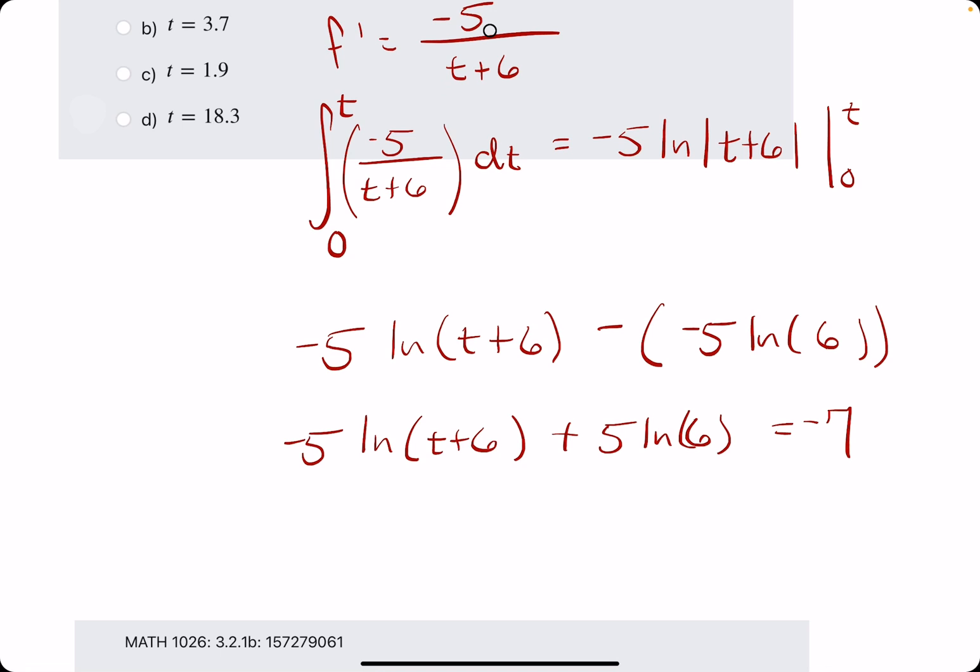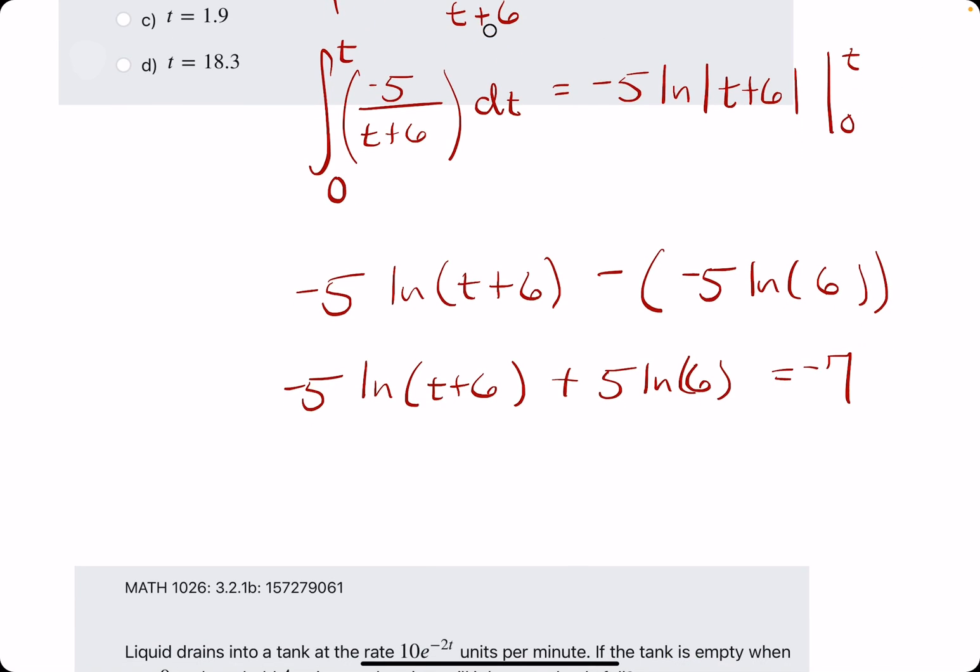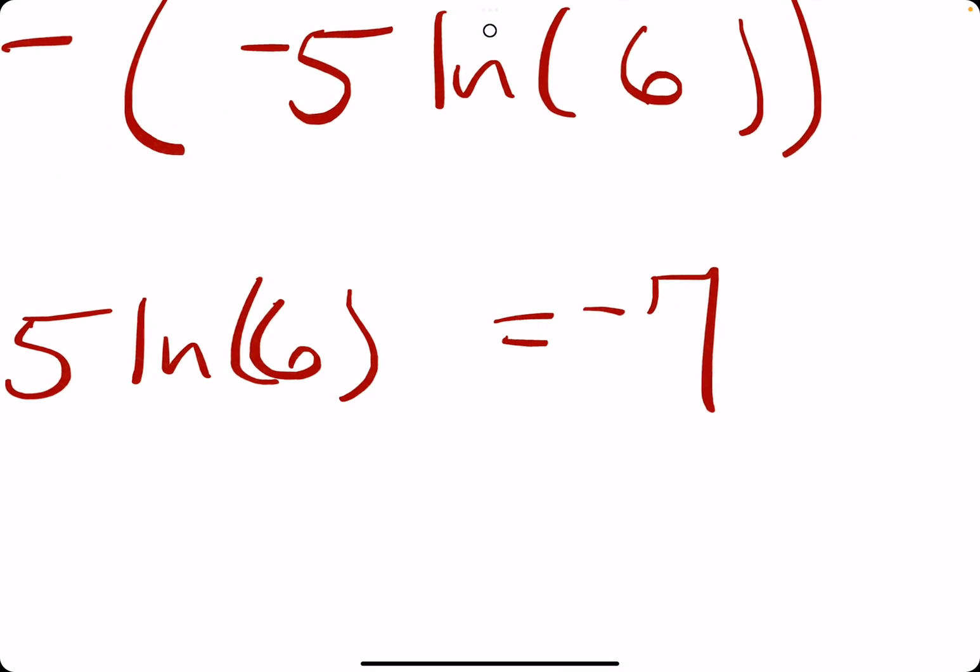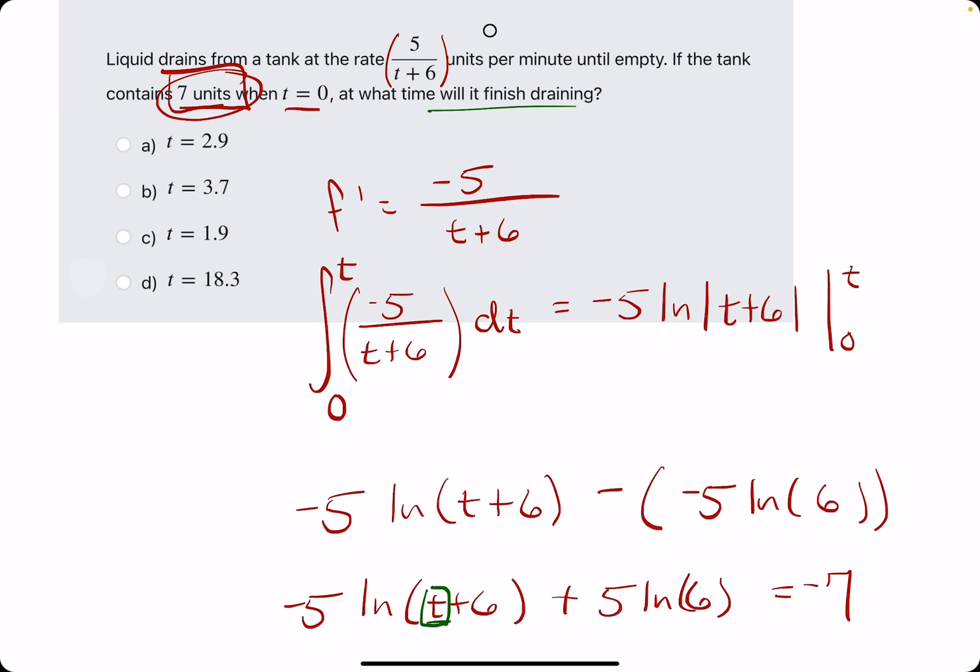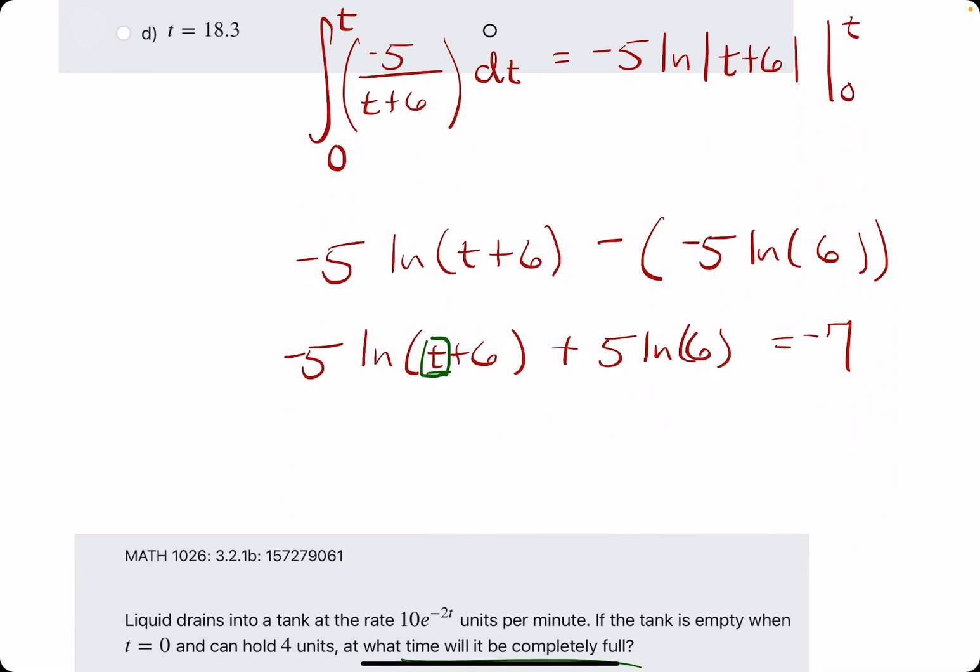Or potentially negative seven, because when will the change be negative seven? That means it will have lost seven units. So we're going to try out negative seven and see how we do. We're going to try to isolate this t. We're solving for t so we can find the time value when it completely loses those seven units of liquid.